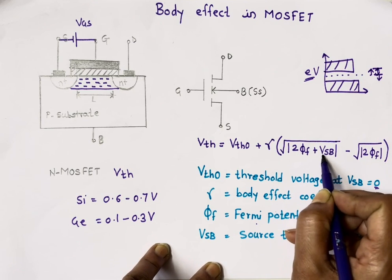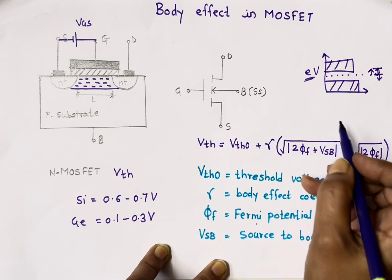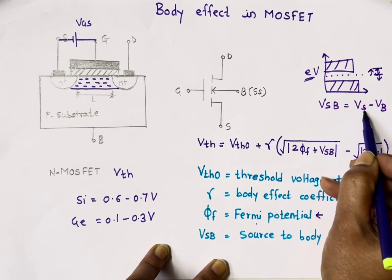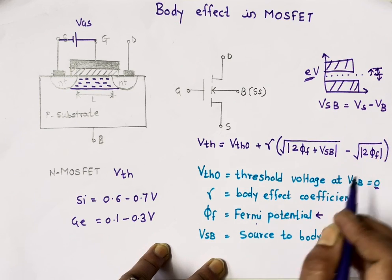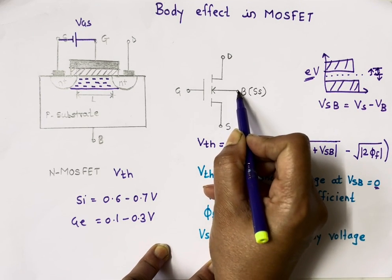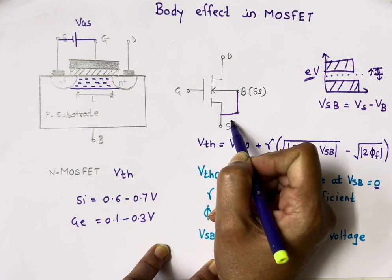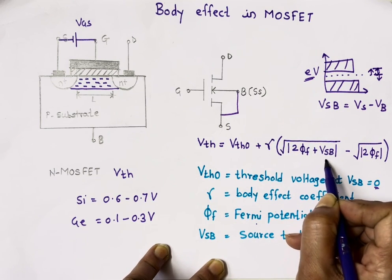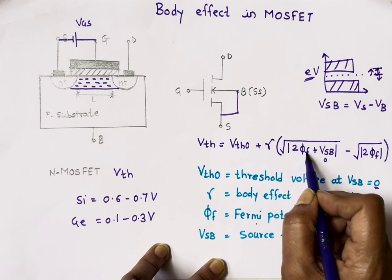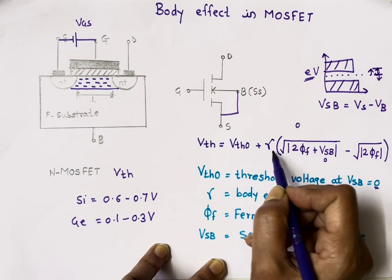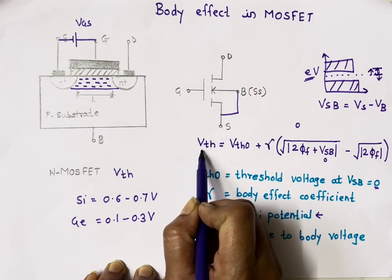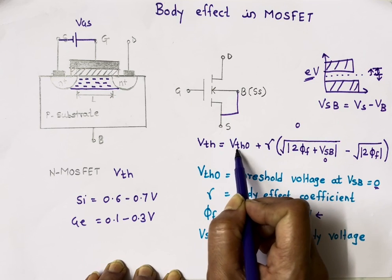VSB is the voltage difference between source and substrate. If the body and source are connected or shorted, then VSB becomes 0. The term under the square root becomes √(2ΦF) − √(2ΦF), which equals 0, so γ × 0 = 0. Therefore, when source and body are at the same potential, the threshold voltage equals VTH0.